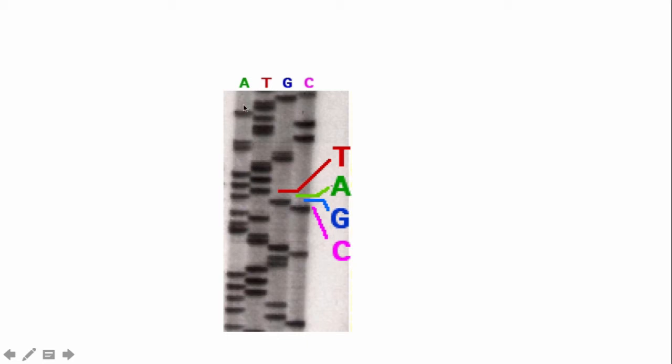So nowadays, we do Sanger sequencing by using different fluorescent labels for the stop codon for A, T, G, and C. And if you run them in an acrylamide gel that can separate molecules by a single nucleotide, you get this ladder. And each step in the ladder tells you what the base pair is where the sequencing reaction was terminated by these fluorescently labeled stop codons.